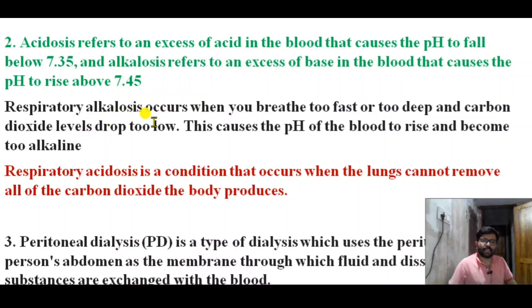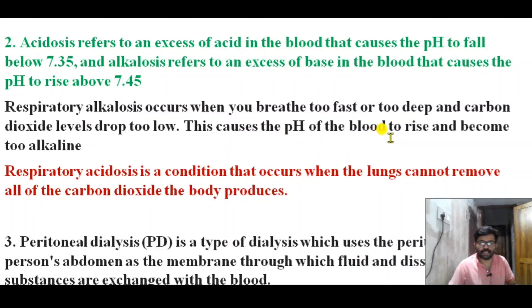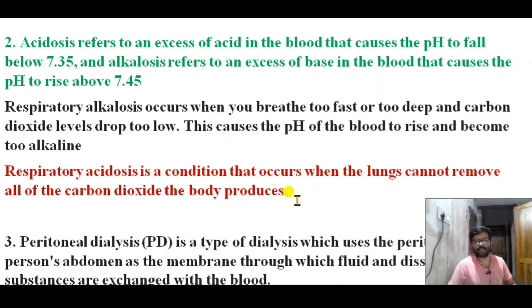Respiratory alkalosis occurs when you breathe too fast or too deep — carbon dioxide levels drop too low, causing the pH of the blood to rise into alkalosis. Respiratory acidosis is a condition where the lungs cannot remove all of the carbon dioxide the body produces, causing pH to fall.